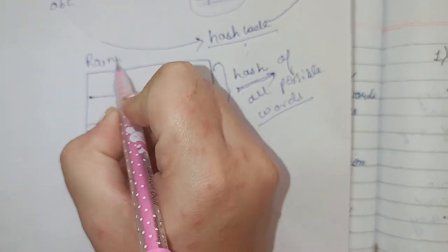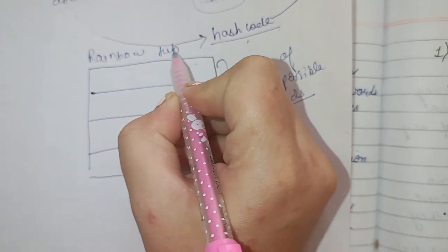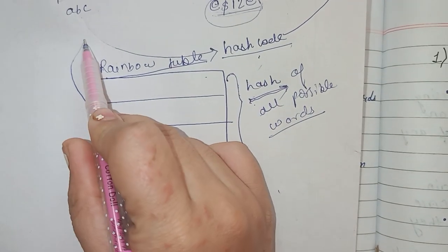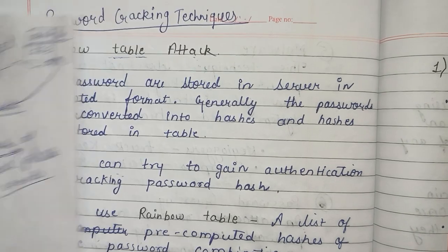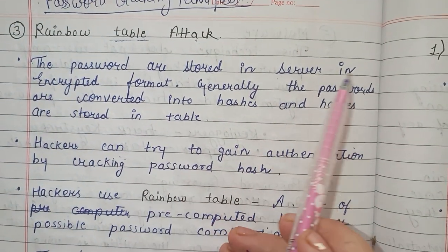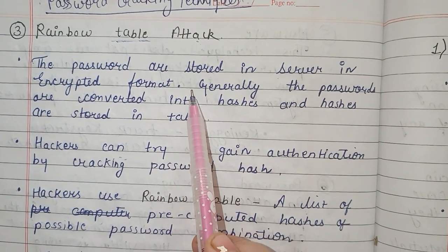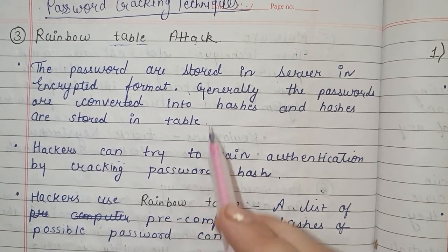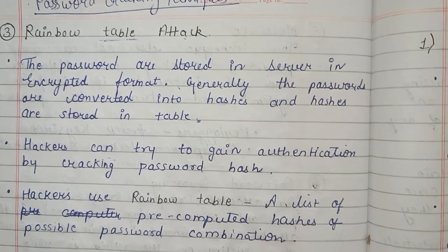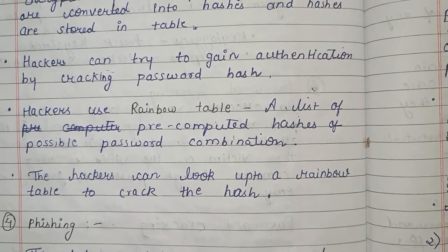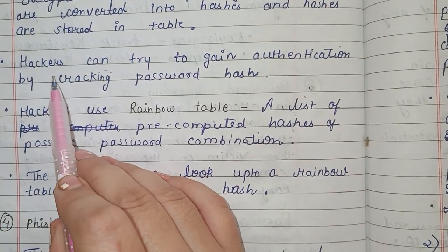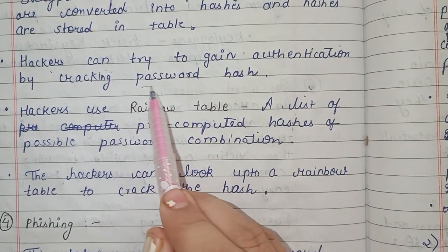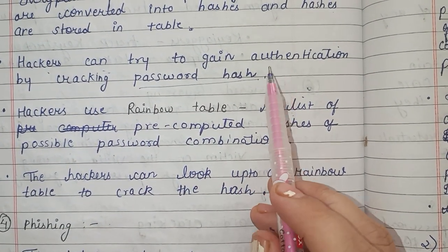This is what we call a rainbow table. By using this rainbow table, the attacker tries passwords one by one against a website. The passwords are stored on the server in encrypted format — they are converted into hashes and the hashes are stored on the server. Hackers who have the password hash try to crack the hash code and gain authentication.